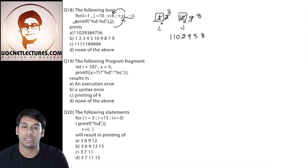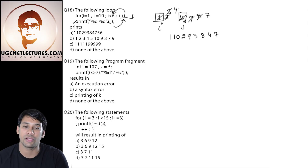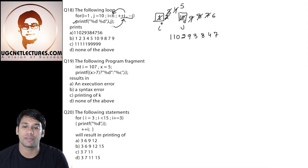It will increment the value of i, so the value of i becomes 4 and the value of j becomes 7. 4 is less than 6, therefore it will print the value of i and j — so it will print 4 and 7. Again it will increment the value of i, so the value of i becomes 5 and the value of j becomes 6. 5 is less than 6, therefore it will print the value of i and j — so it will print 5 and 6.